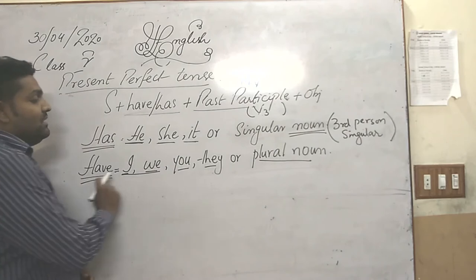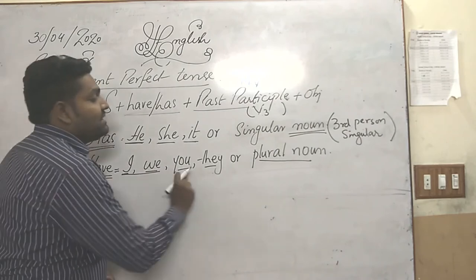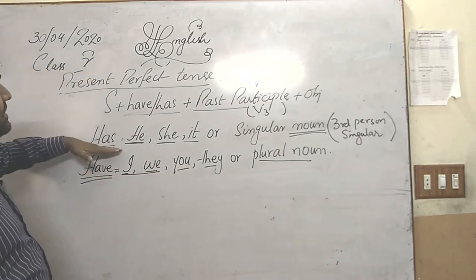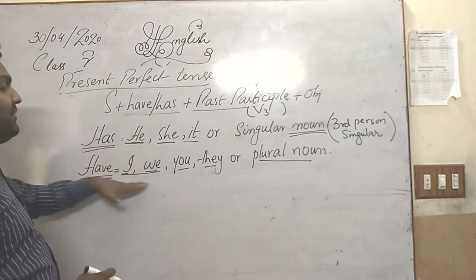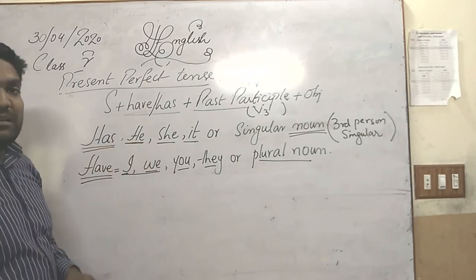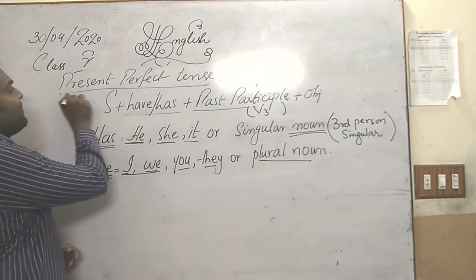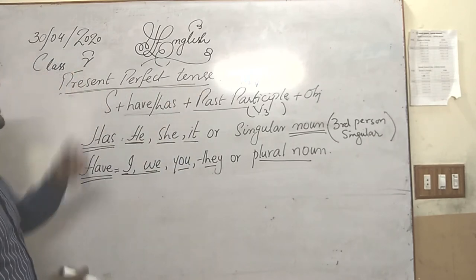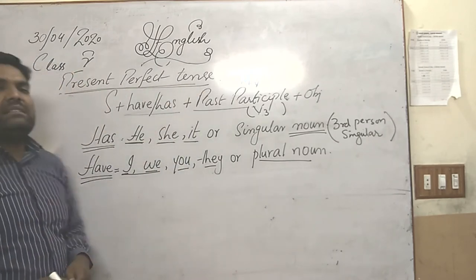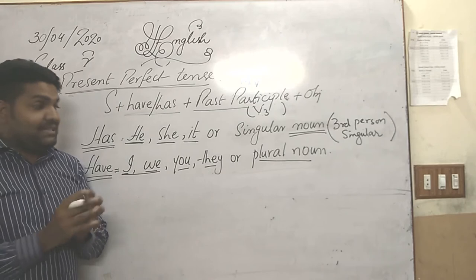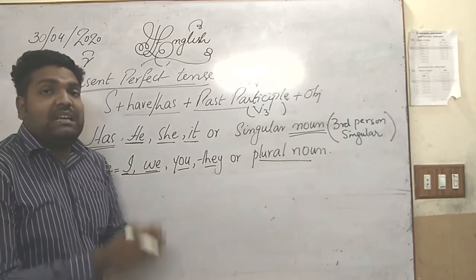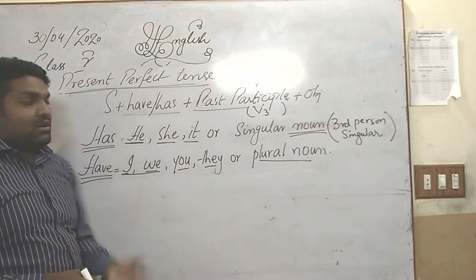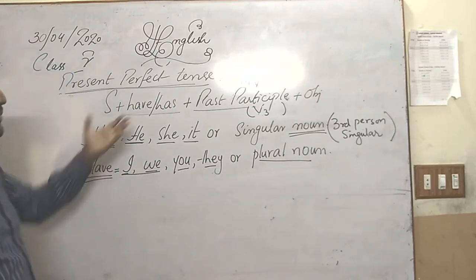So we use 'has' with third person singular subjects and 'have' with the other subjects. Now, what is present perfect tense? Present perfect tense is the tense in which we express that the work has been done recently or in the present time.